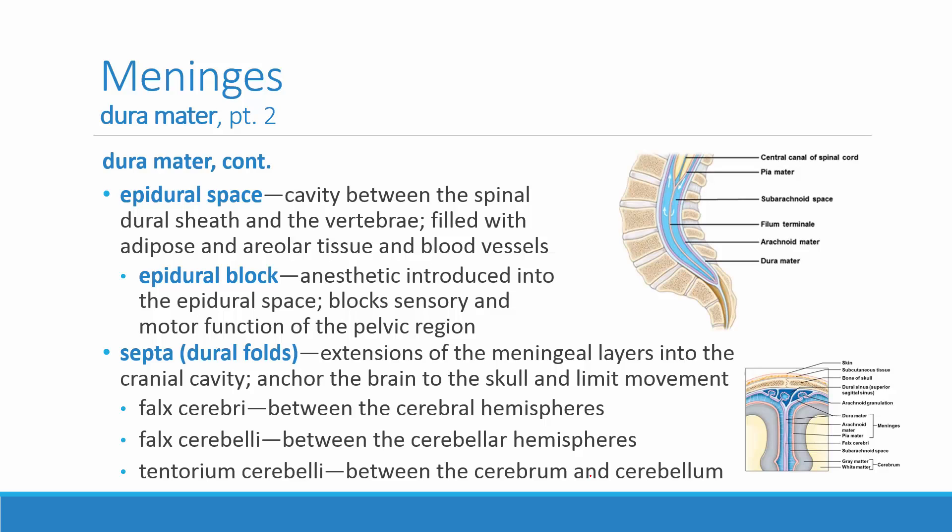The epidural space is external to the bone of the vertebrae and is filled with adipose and areolar tissue and blood vessels. Anesthetic is introduced into this epidural space to provide an epidural nerve-blocking agent and to block the sensory and motor functions of the pelvic region. It's administered lower in the back so that it only affects the nerves feeding into the legs, pelvis, and below.